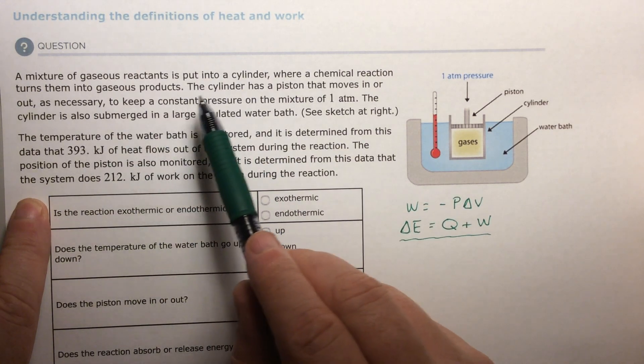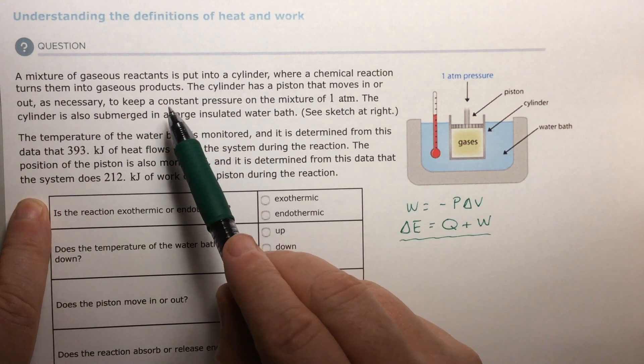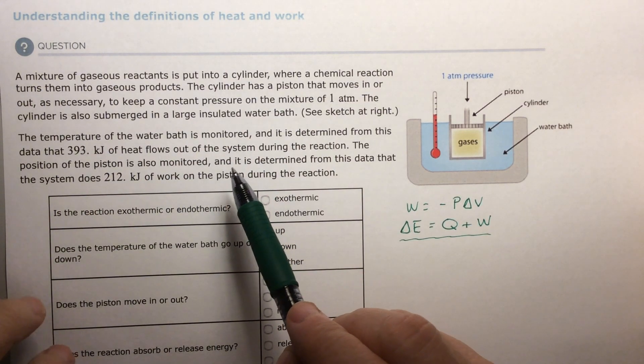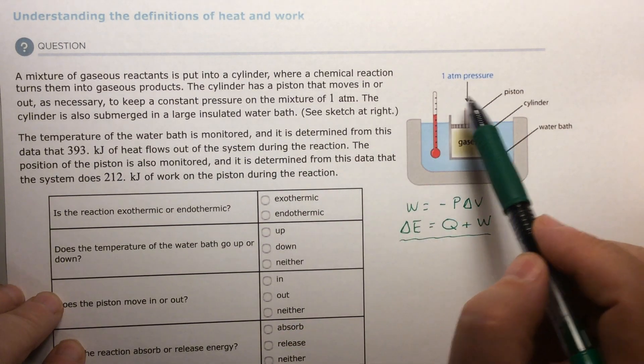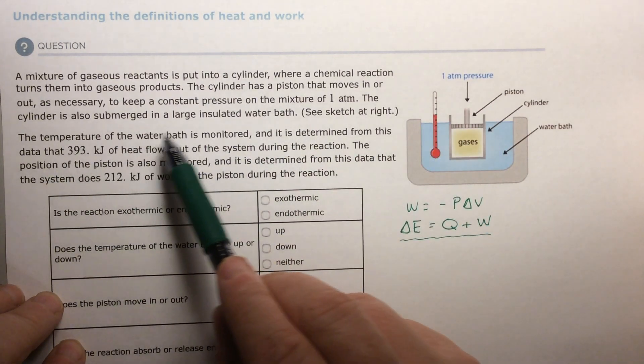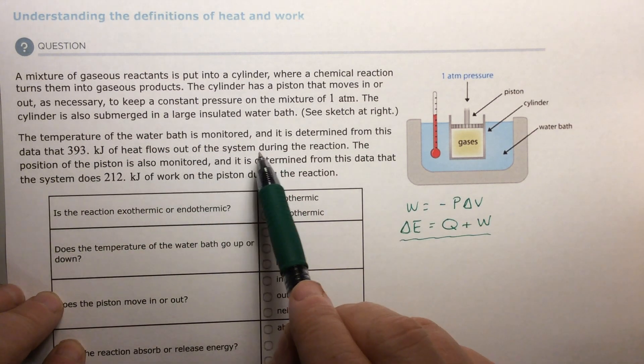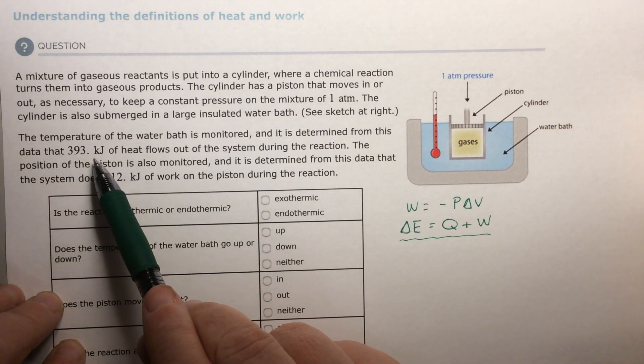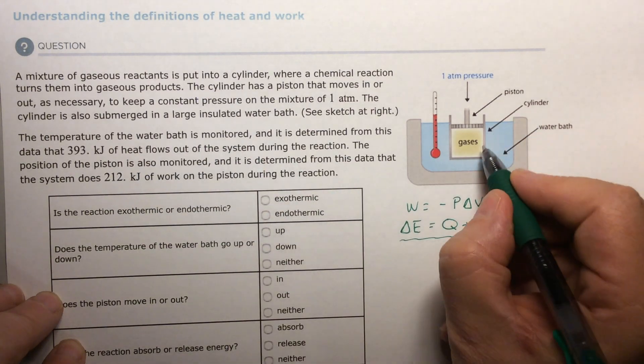A mixture of gaseous reactants is put into a cylinder where the chemical reaction turns into gaseous products. The cylinder has a piston that moves in or out as necessary to keep the constant pressure on the mixture of one atmosphere. The cylinder is also submerged in a large insulated water bath. The temperature of the bath is monitored and it is determined from the data that 393 kilojoules of heat flows out of the system during the reaction.